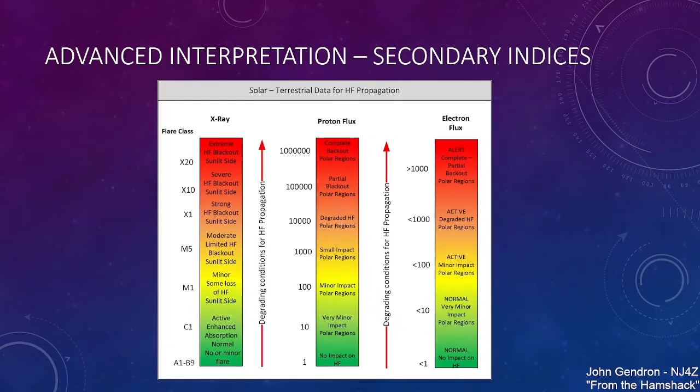Now we talk about advanced interpretation and that's that X-ray class flare class stuff, the proton flux and electron. When you talk about an A9, A1 to B9 flare, no major blackout areas. But when we start getting up at an X-class, which we had an X-class flare back before Halloween, we had an X1 flare and we saw a really strong blackout. I wanted to save that prediction center so we could see it, so you can see it, but it was pretty cool to see it actually happen on the graphical representation.